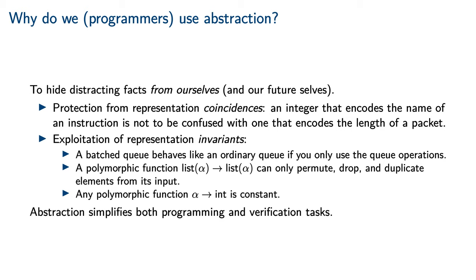Abstraction provides protection from representation coincidences — for instance, an integer that encodes the name of an instruction is not to be confused with one that encodes the length of a packet. A more advanced use of abstraction is to exploit representation invariants: a batched queue has better amortized complexity than an ordinary queue, and if your code only uses the queue operations, you can be sure it will not depend observably on the difference. Likewise, polymorphic functions between lists can only permute, drop, and duplicate elements, so there are only so many things that can be incorrect about such a function. For a more extreme example, any polymorphic function into a constant type is itself a constant function. Therefore, abstraction simplifies both programming and verification tasks.